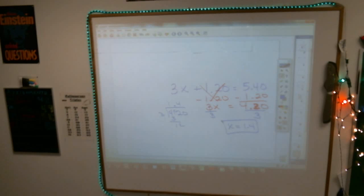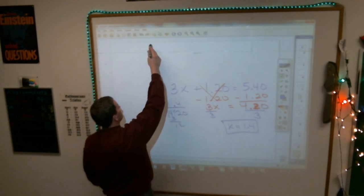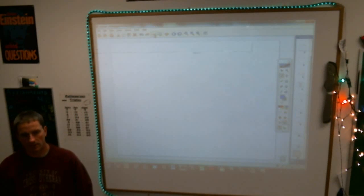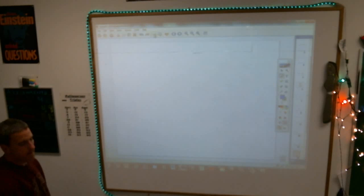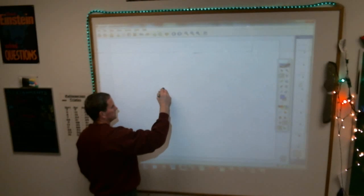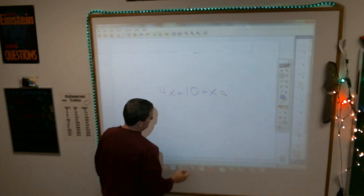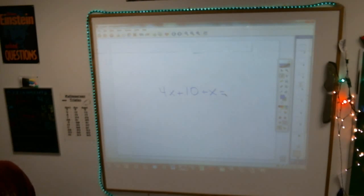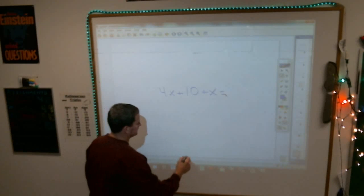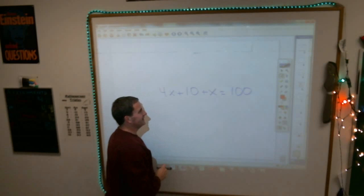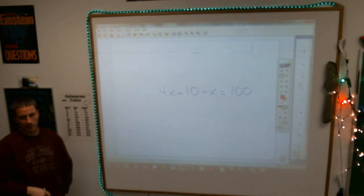Now, just when you thought life was easy and this one's going to be a piece of cake, here is one more step that actually makes it a three-step problem. Write this one now. 4x plus 10 plus x equals 100.